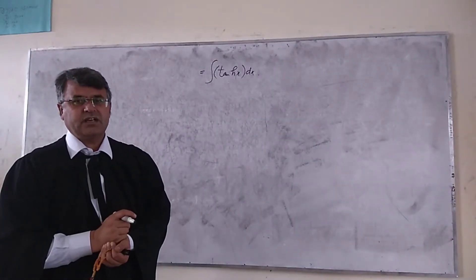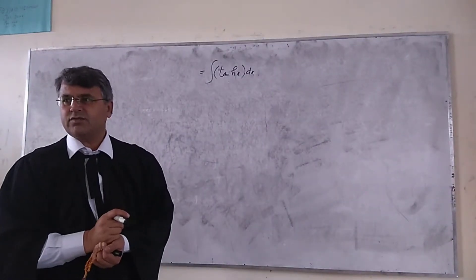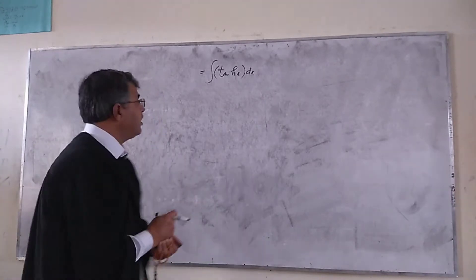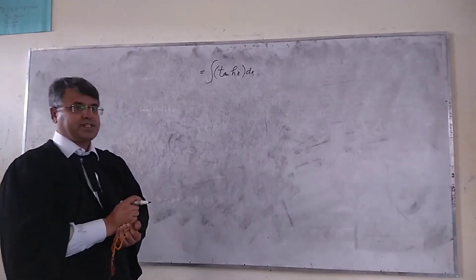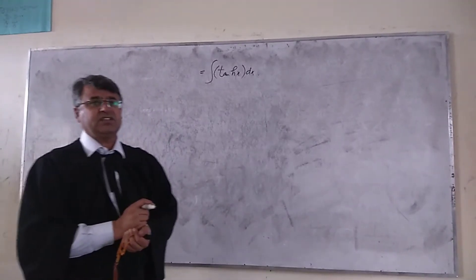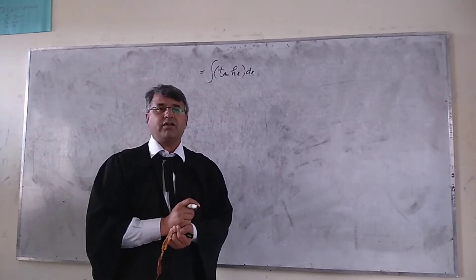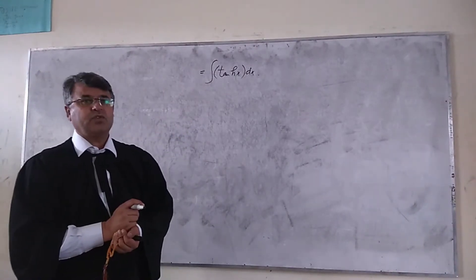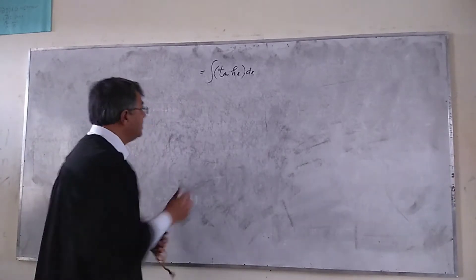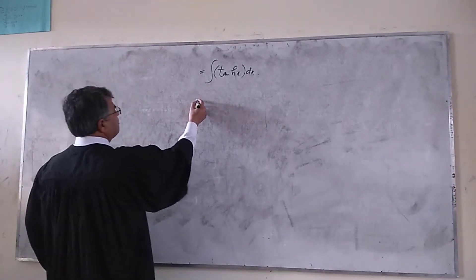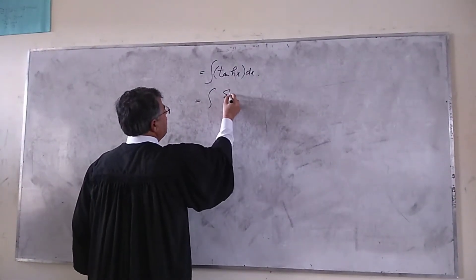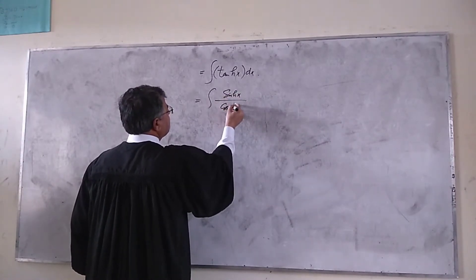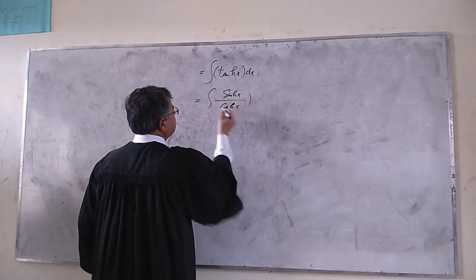Our next question is to integrate tanh(x) — the hyperbolic tangent of x. There is no function that is directly the derivative of tanh(x), therefore we rearrange the given function, which is equal to sinh(x) divided by cosh(x).